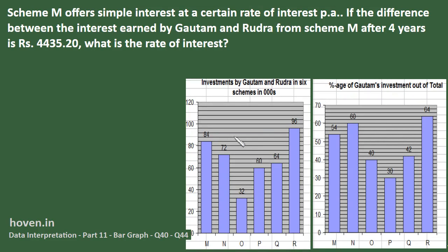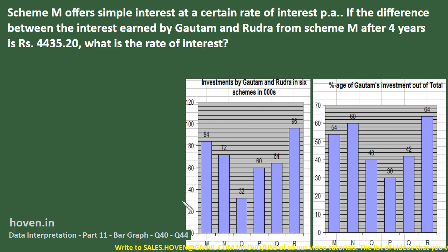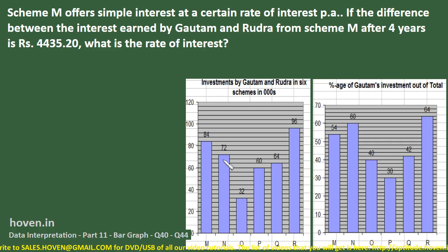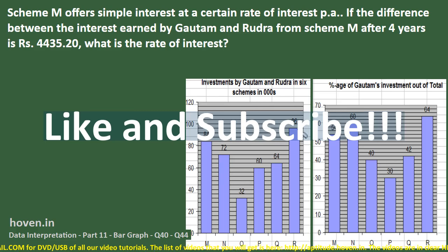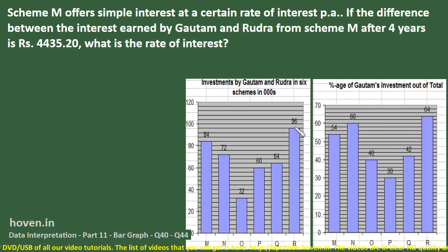We have been given two diagrams to study and answer questions. The first one shows investments by Gautam and Rudra — two friends — in six schemes, in thousands of rupees. Together they invest 84,000 in scheme M, 72,000 in scheme N, and 96,000 in scheme R.